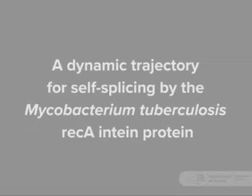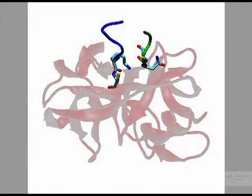This is a movie showing a continuous dynamic trajectory of the protein self-splicing chemical reaction carried out by the RecA Intein in Mycobacterium tuberculosis. The reaction consists of a protein sequence called the Intein, shown in transparent red.